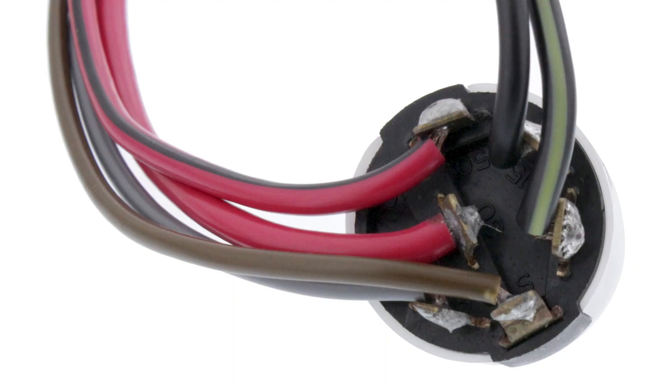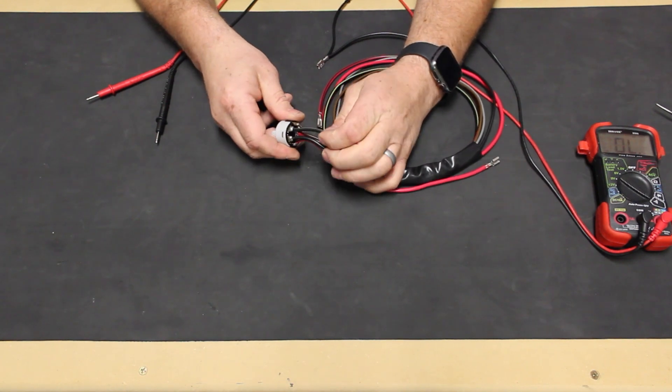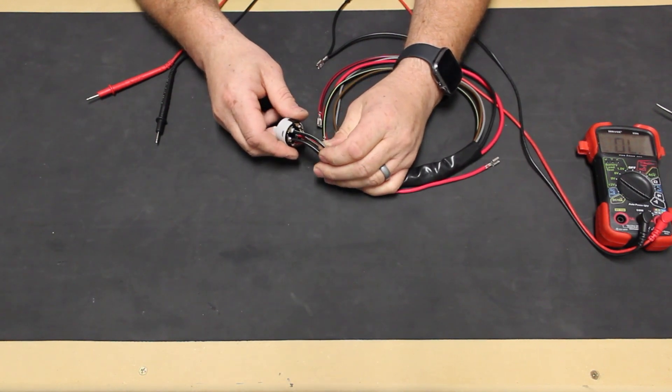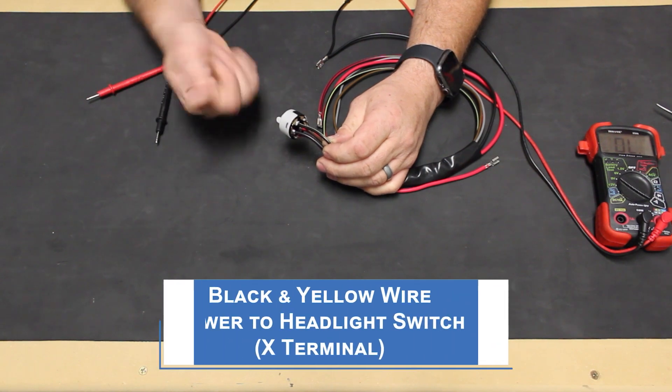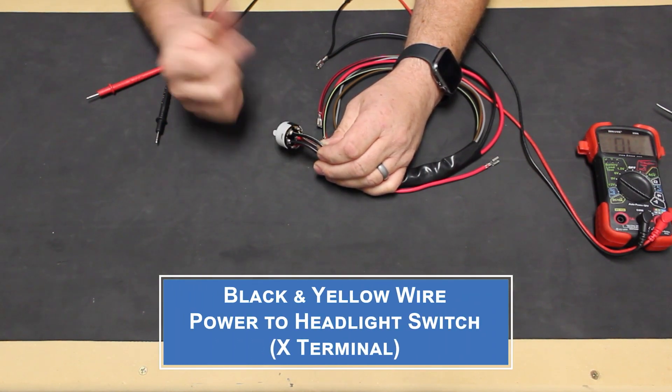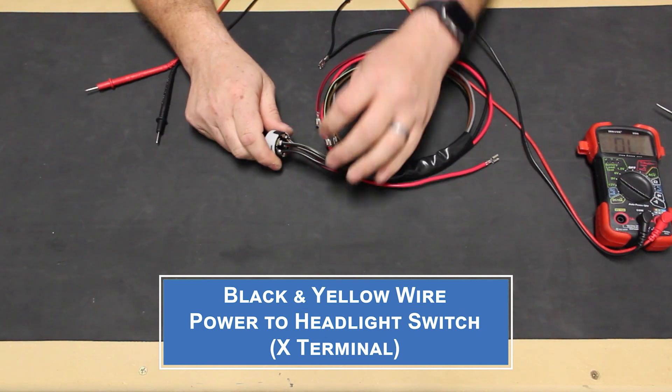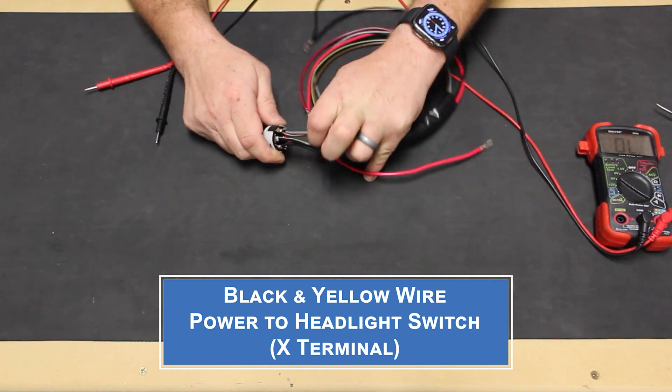Looking closely at the back of our switch, you can actually see the numbers next to the terminals that the wires are attached to. As we have a 1971, we also have an X terminal that we had addressed in our headlight switch video. This black and yellow wire connects to our headlight switch. Most VW ignition switches for 1971 and later models will have an X terminal. This allows the headlights to turn on only once the key is turned on.